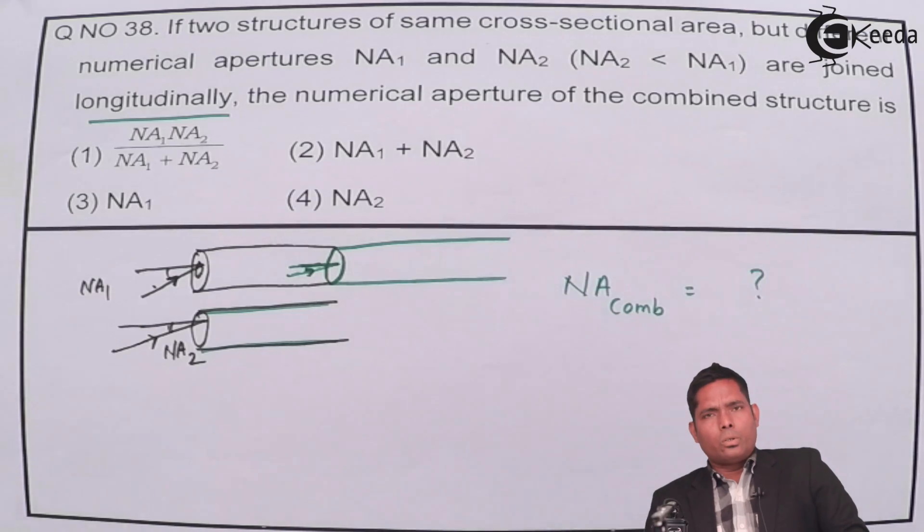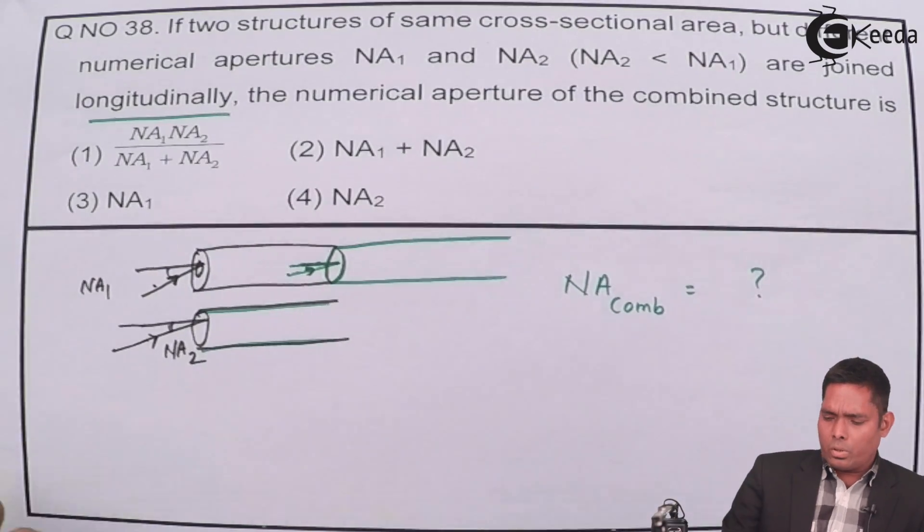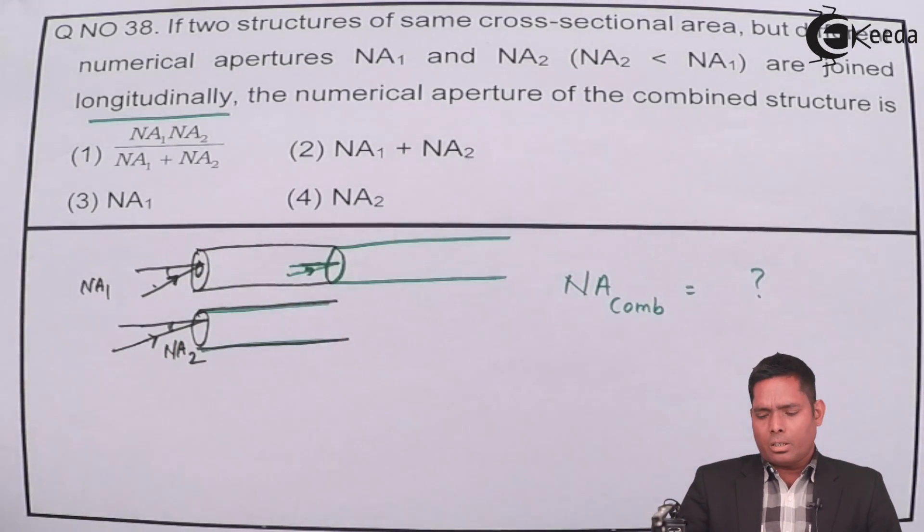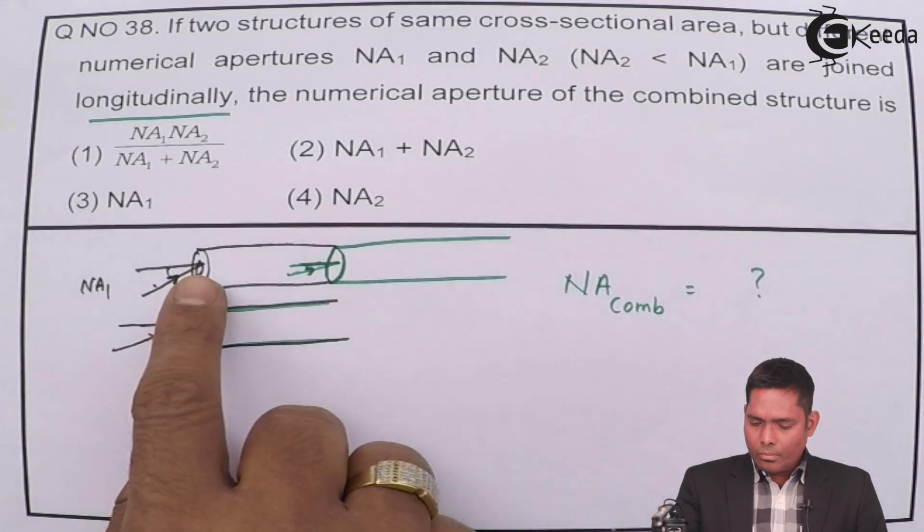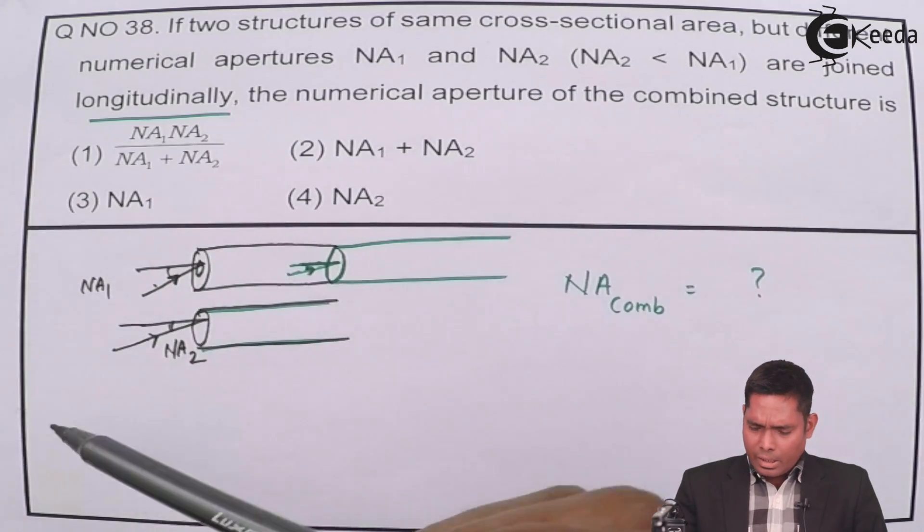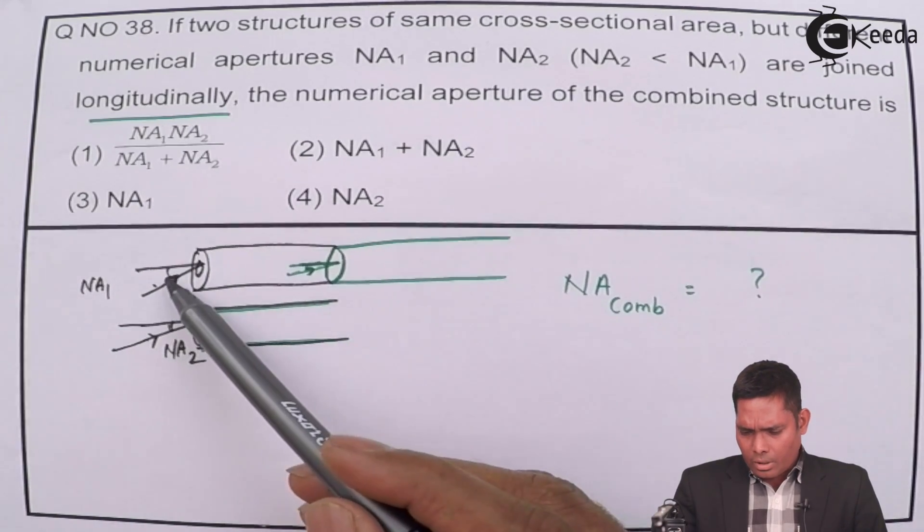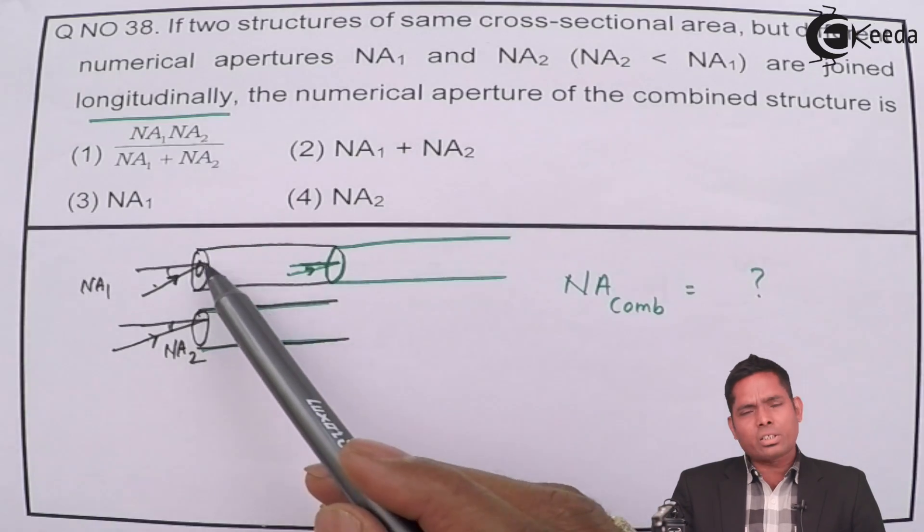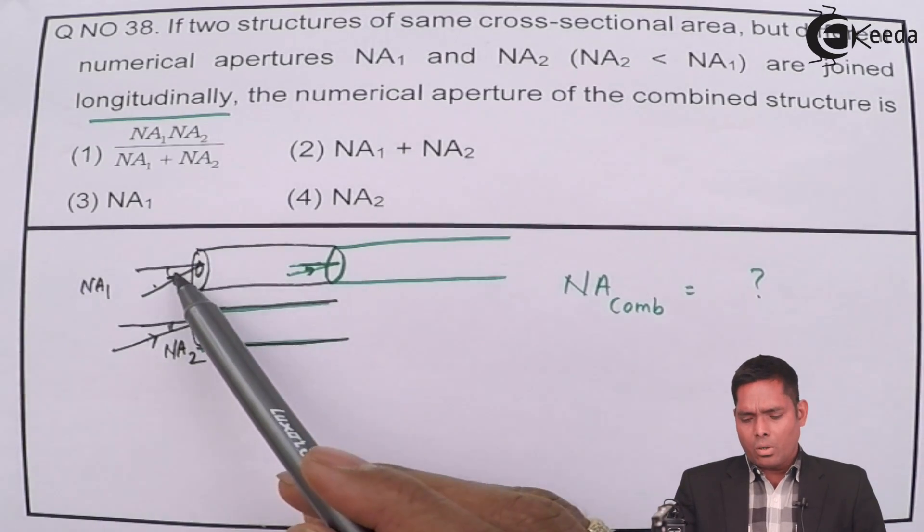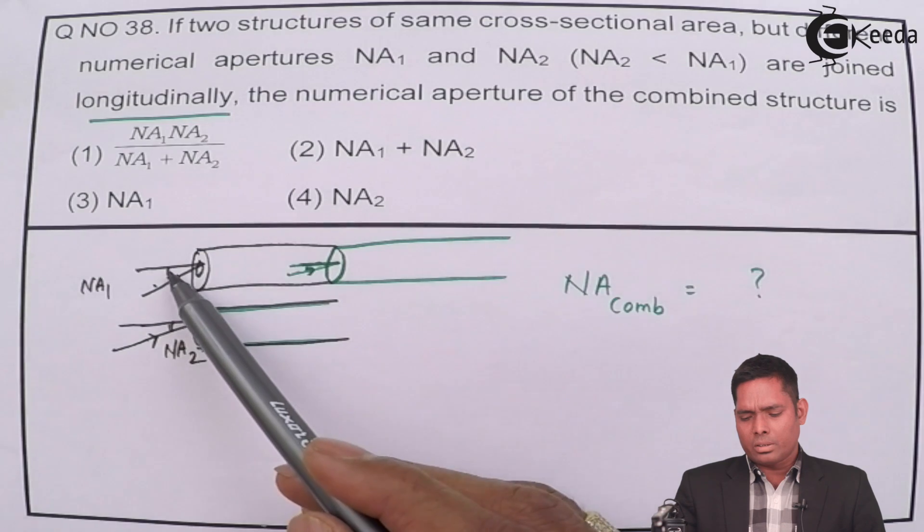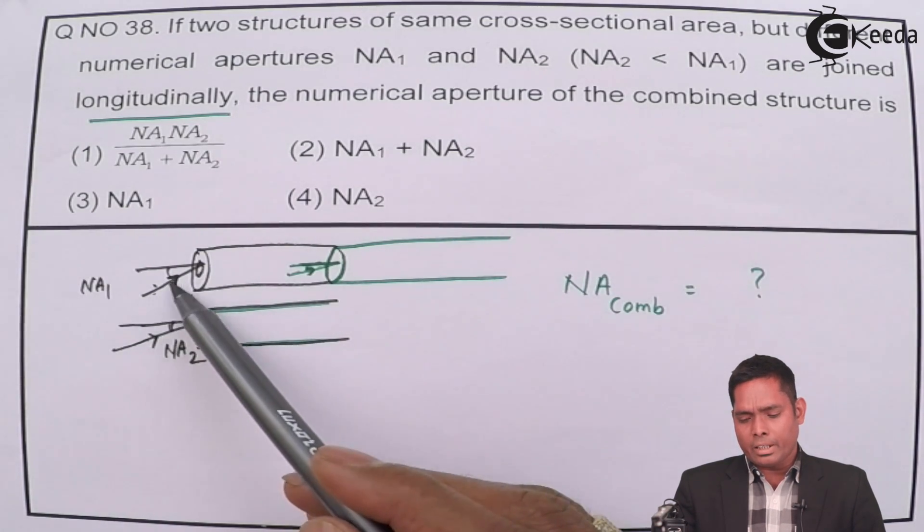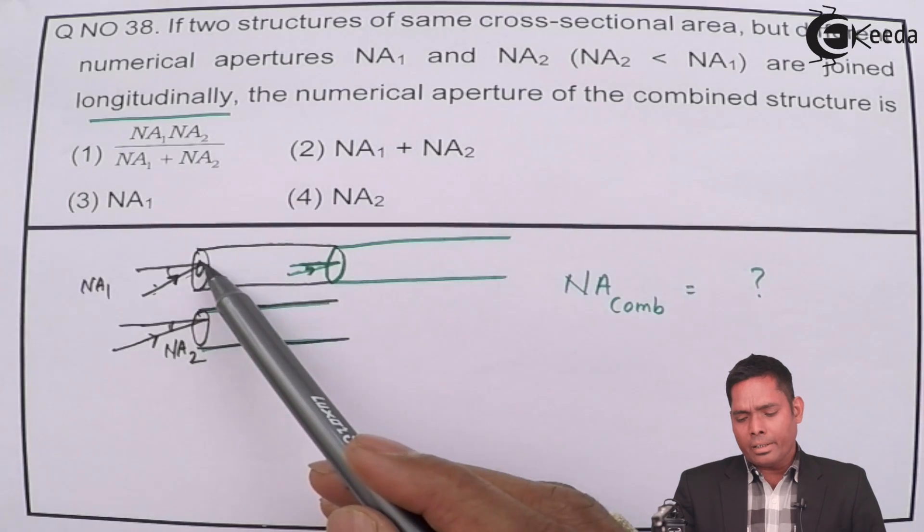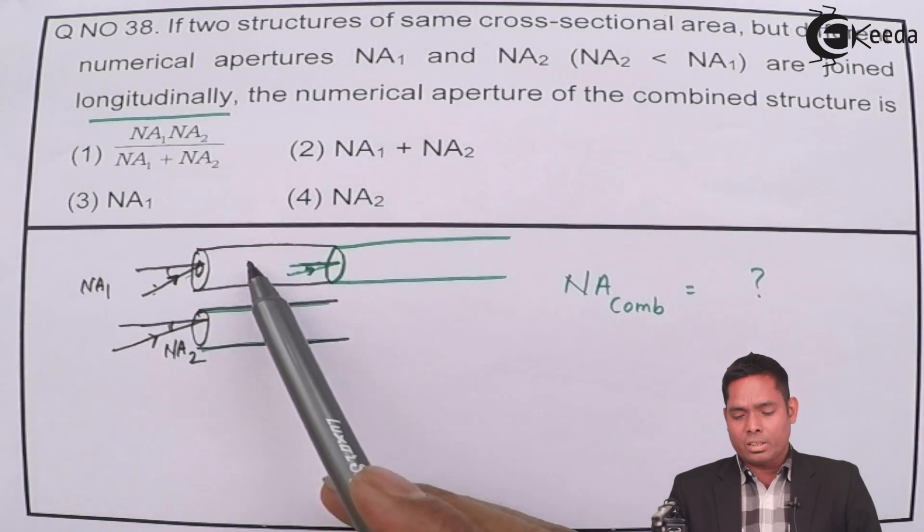Now, numerical aperture defines the capacity of light to enter through the fiber. Suppose that here the critical angle in this case is achieved, or this is the maximum angle through which this light can enter and it can go total internal reflection in this first one.